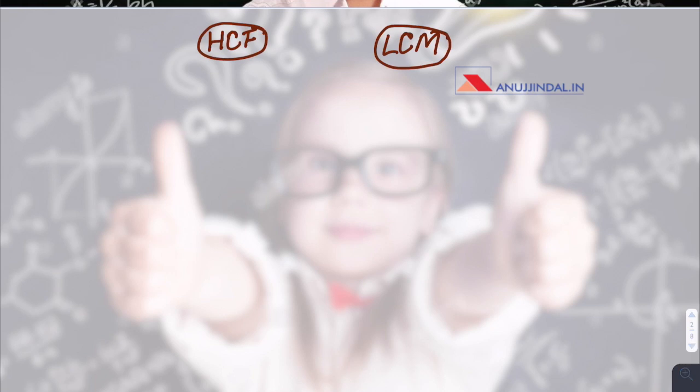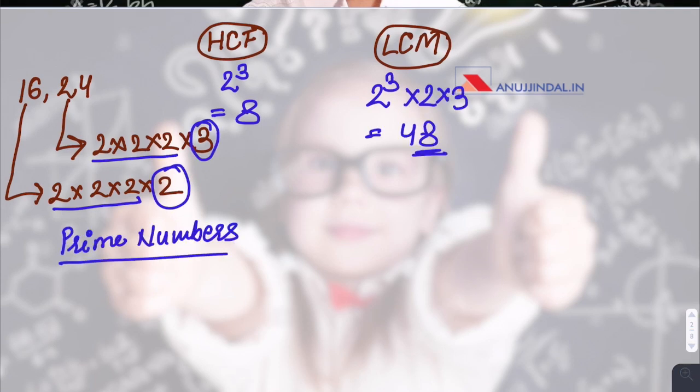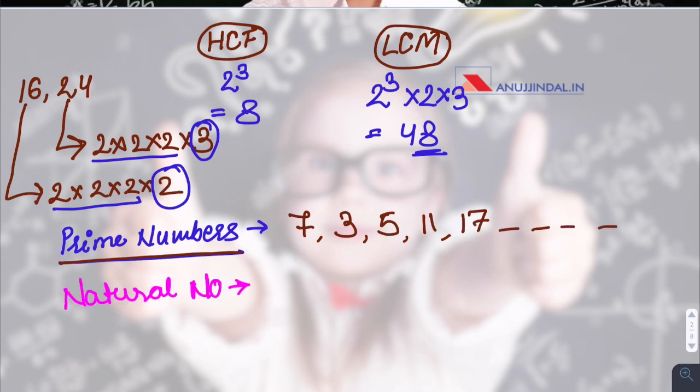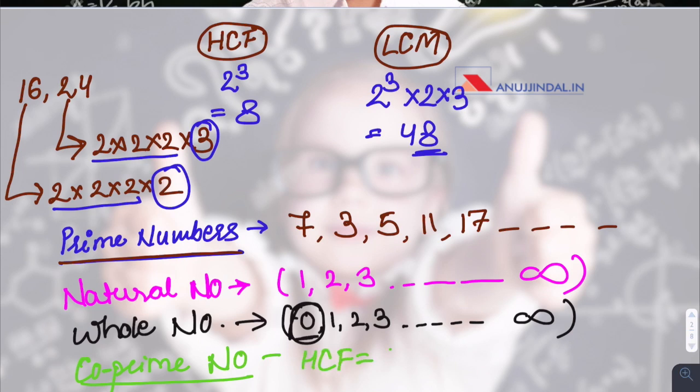Let us quickly revise some basic concepts. As you must be knowing, HCF is highest common factor and LCM is least common multiple. Let us assume two numbers, 16 and 24. We can write 16 as 2^4 and express 24 as 2^3 × 3. For HCF, this is the common part, hence HCF would be 2 cubed that is 8. For LCM, we'll first write the common part and then the part which is not common. Prime numbers are numbers that are only divisible by one or themselves like 7, 3, 5, 11, 17 and so on. Natural numbers start from 1 till infinity. Whole numbers are nothing but extended form of natural numbers. They start from 0 otherwise they are same as natural numbers. Co-prime numbers: when the HCF of two numbers is 1, they are known as co-prime numbers.